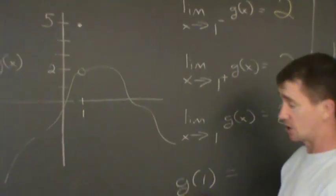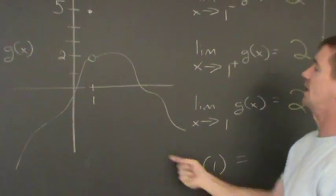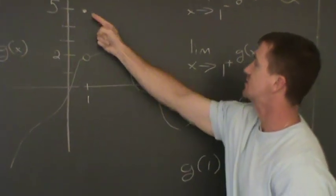Now, the pre-calc question. What is g of one? What is the y value at x equal to one? It's five.